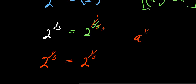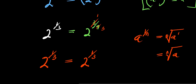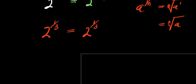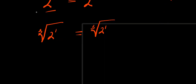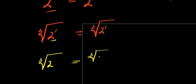Now, if you have a to the power of 1 over n, this equals the nth root of a to the power of 1, which gives the nth root of a, because a to the power of 1 is a. Applying that here, we have the cube root of 2 to the power of 1, which equals the cube root of 2 to the power of 1. So 2 to the power of 1 is 2, giving cube root of 2 equals cube root of 2. Left hand side equals right hand side.